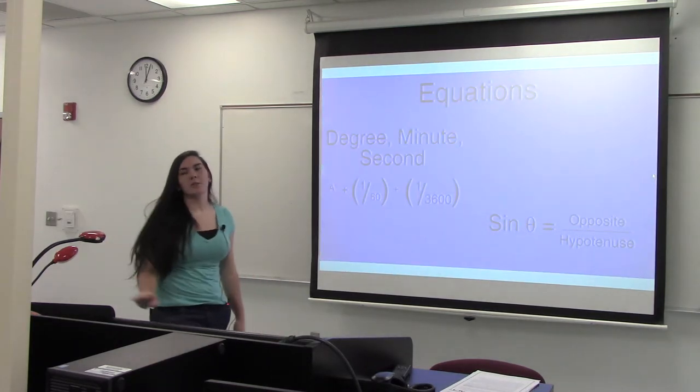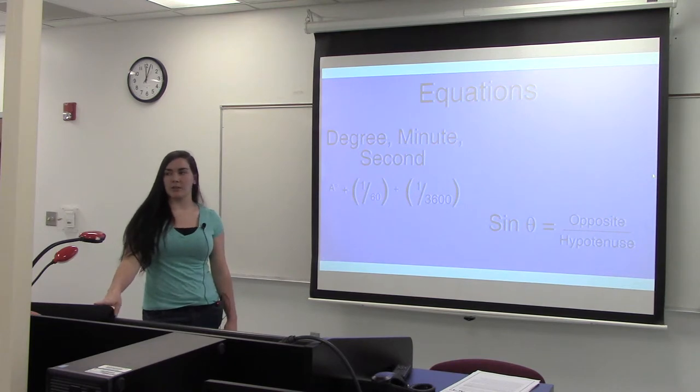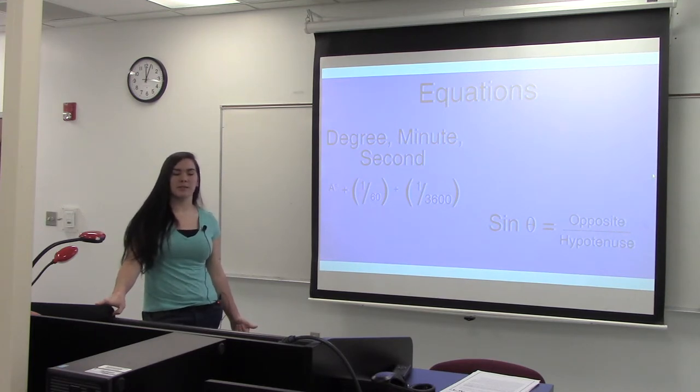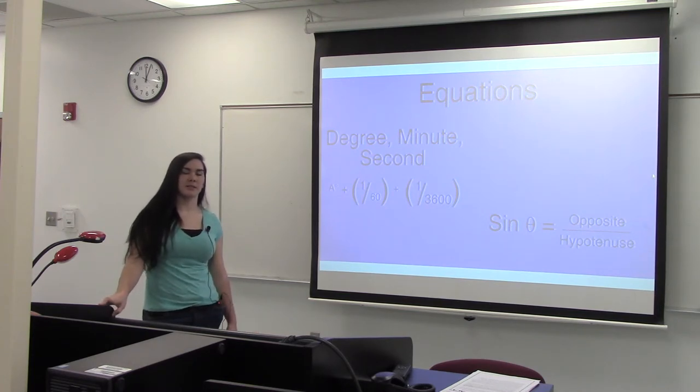To do this you would use two equations: the degree minute second equation and then the sine theta equation. For the degree minute second, you will have the degree plus the minute divided by 60 plus the second divided by 3600.